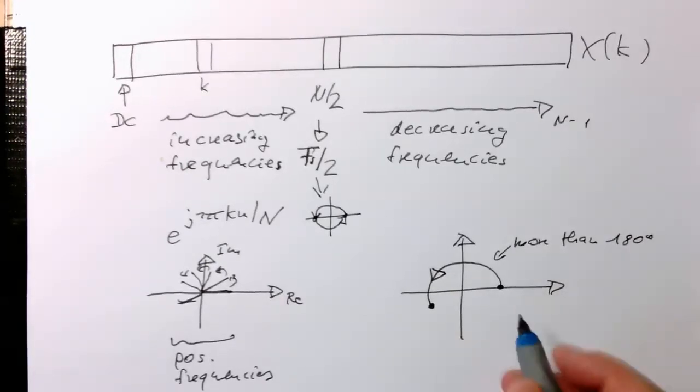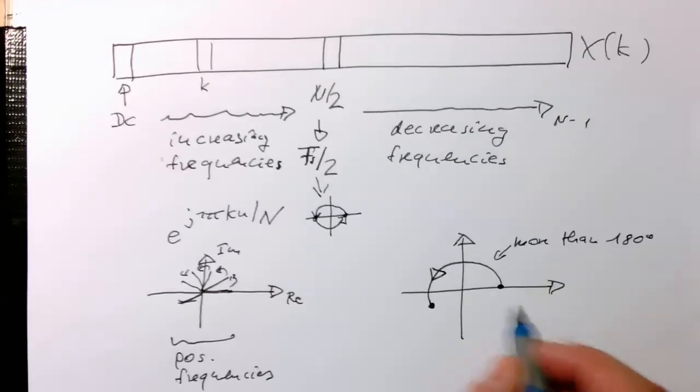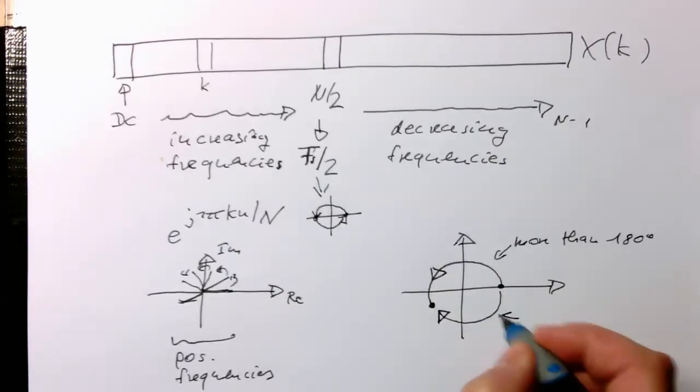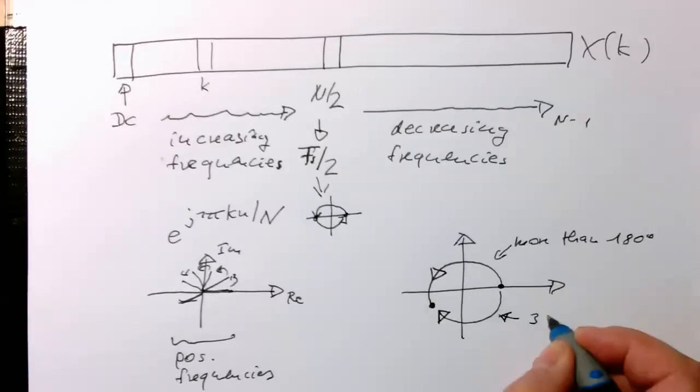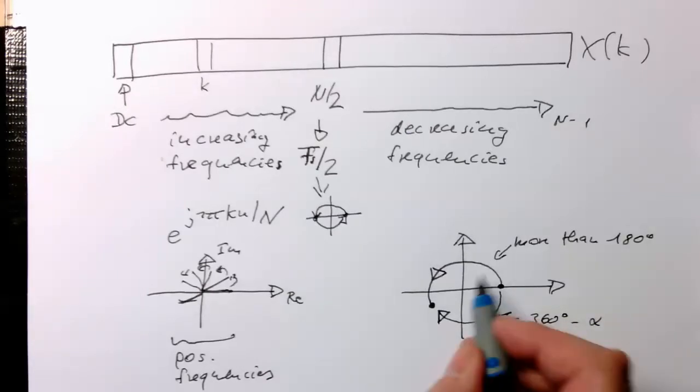But this can also obviously be interpreted as rotating the other way around. So we're doing this here. We have something like 360 degrees minus this angle alpha.